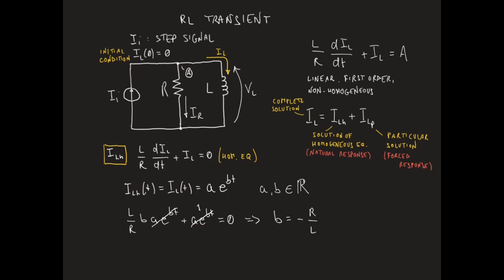Note that L over R has the dimension of time, so it is measured in seconds. L over R is typically indicated with the Greek letter tau and is called the time constant of the RL network.